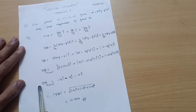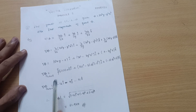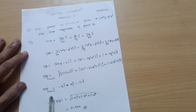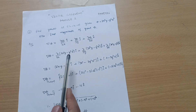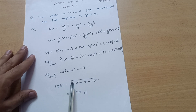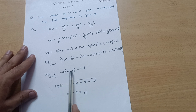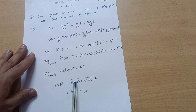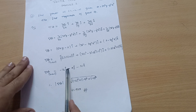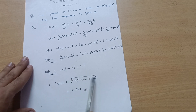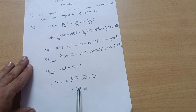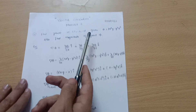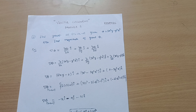Now we calculate the magnitude of grad phi. The magnitude of del phi equals the square root of the sum of squares of each component: √((-12)² + (-9)² + (-16)²) = √(144 + 81 + 256) = √481 ≈ 21.9317. That is the answer for the magnitude of grad phi. Make sure to share this video and thanks for watching.